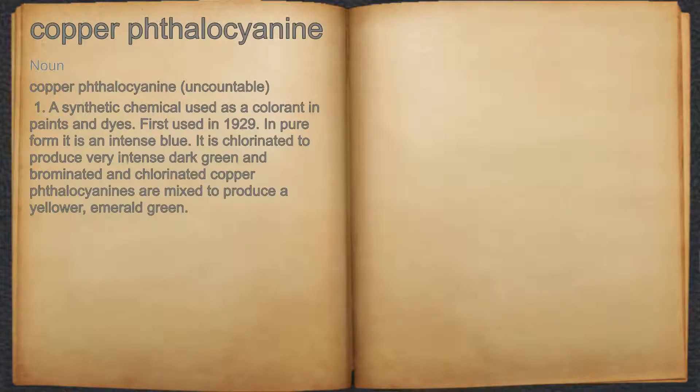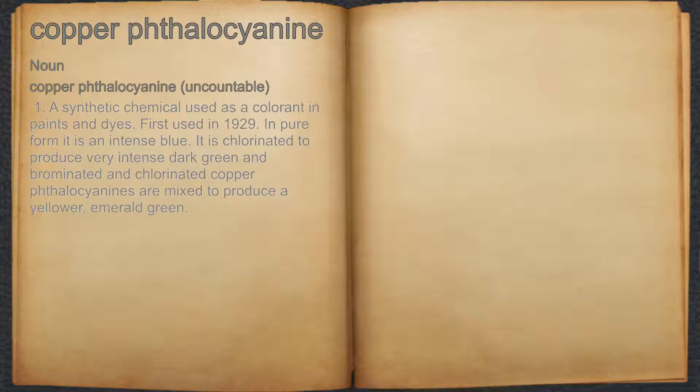Copper phthalocyanine. Noun 1. A synthetic chemical used as a colorant in paints and dyes. First used in 1929. In pure form it is an intense blue.